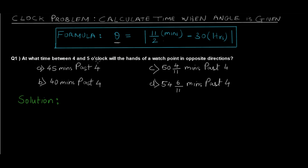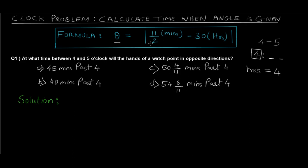Question 1: At what time between 4 and 5 o'clock will the hands of a watch point in opposite directions? By reading this question we understand the time is going to be between 4 and 5, so the hours value is always going to be 4 and we need to find the minutes. The options are 45 minutes past 4, 40 minutes past 4, 54 6/11 minutes past 4, and another mixed fraction.